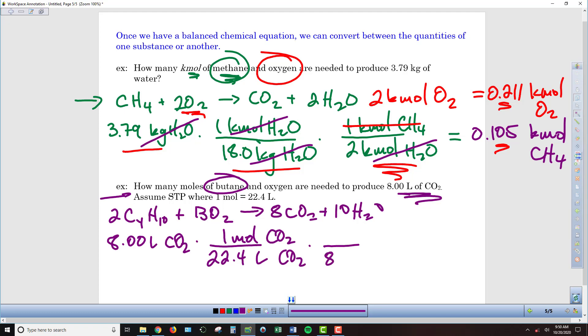So I can see that that's 8 moles of CO2 to 2 moles of the butane, which produces, if we push buttons on our calculator, 0.0893 moles of the butane.